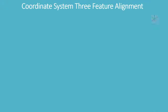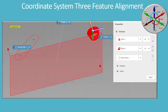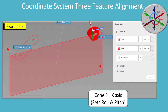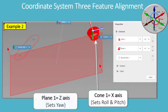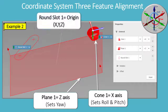Coordinate System Three Feature Alignment: Cone 1 equals X-axis, sets roll and pitch. Plane 1 equals Z-axis, sets yaw. Round Slot 1 equals origin XYZ.